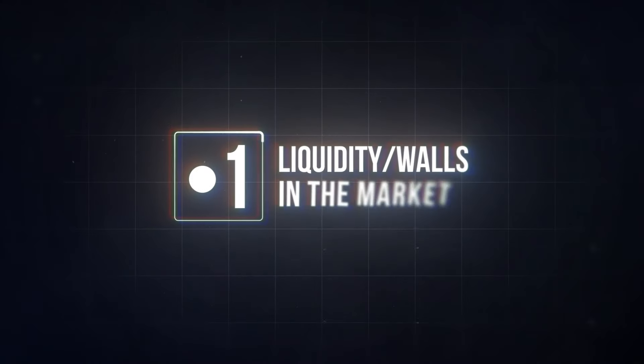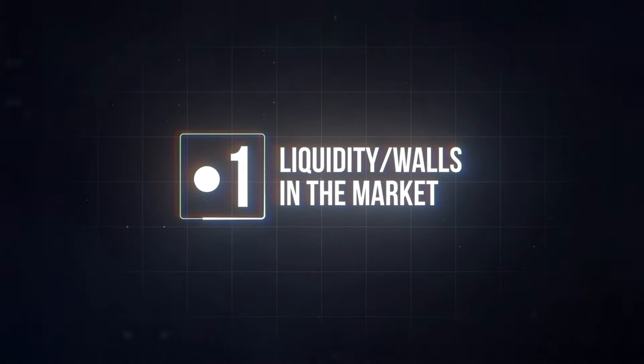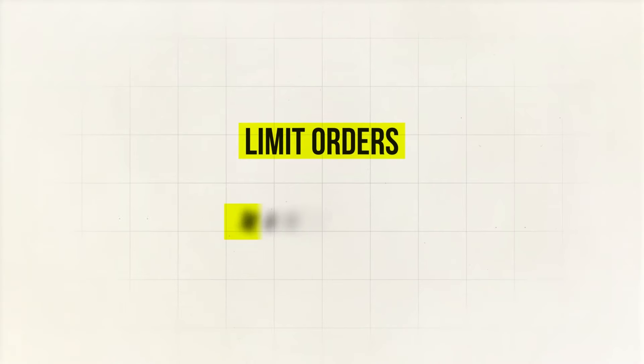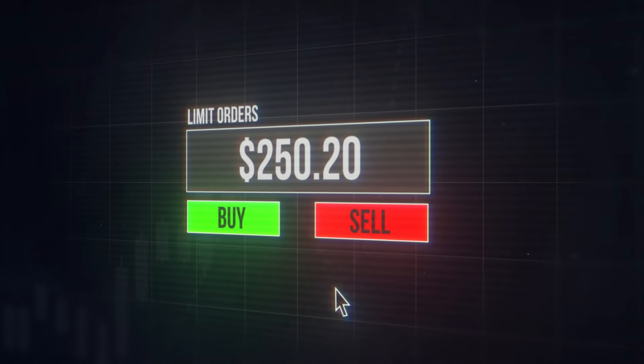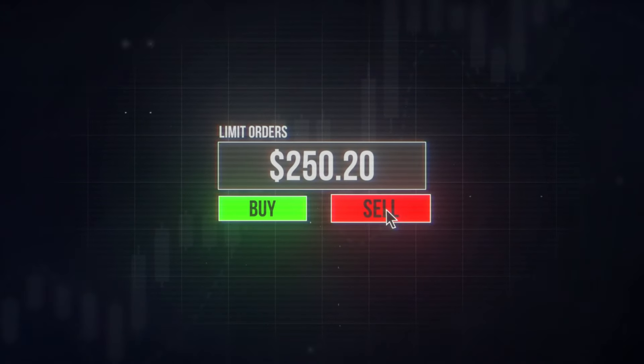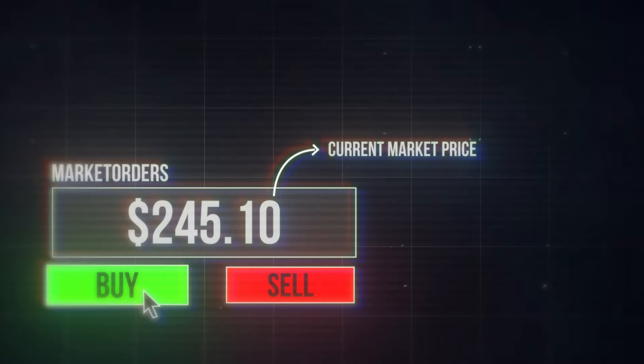The first thing you need to know to use this as a cheat code is liquidity, or walls, in the market. There are two different types of orders: limit orders and market orders. Limit orders let you set the exact price you want to buy or sell at, oftentimes having a wait time to get your order filled. Market orders, however, are aggressive orders that fill almost instantly because they fill at the current market price.